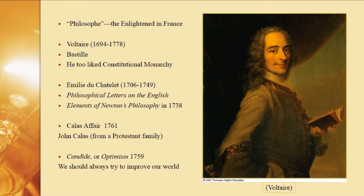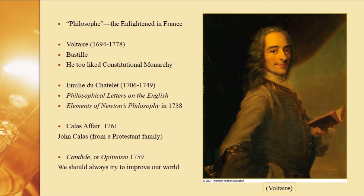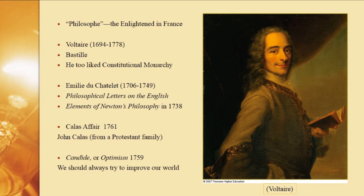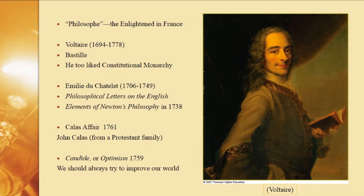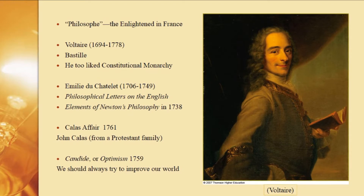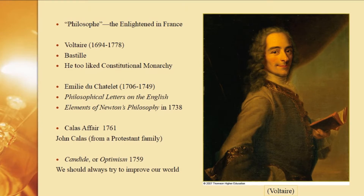Sometimes Voltaire's writing got him in trouble. He wrote about a family in France, they didn't like what he said, and he was imprisoned in the Bastille — a political prison. He was released a year later, but on the condition that he go into exile. He ended up going to England, where he learned quite a bit about the English form of government — the constitutional monarchy.